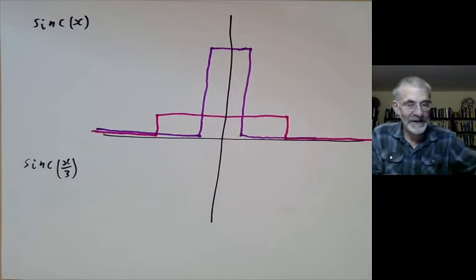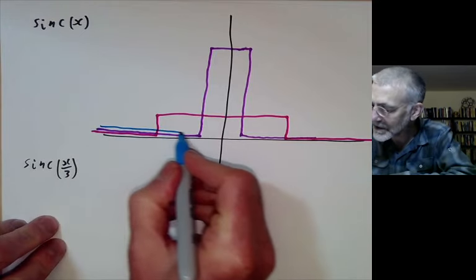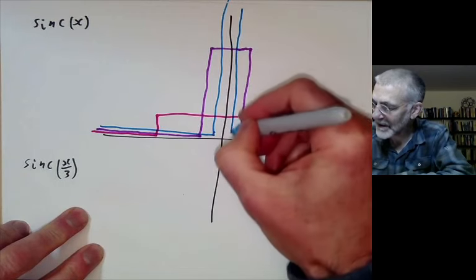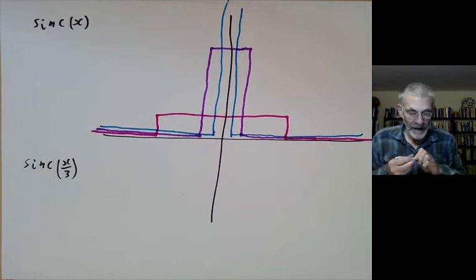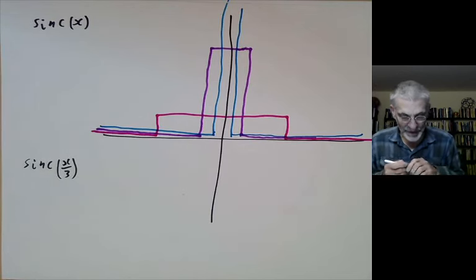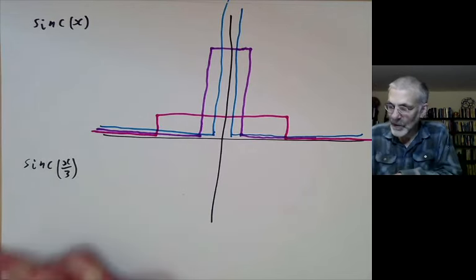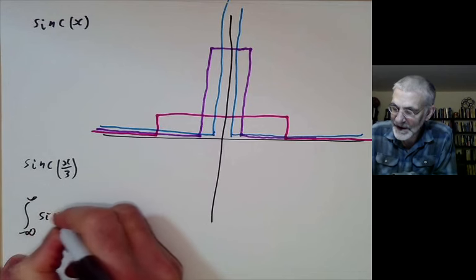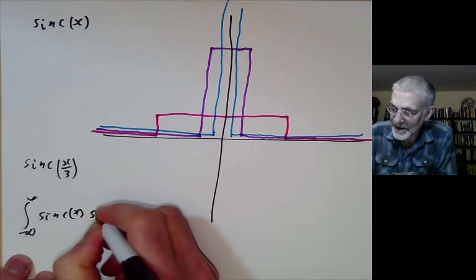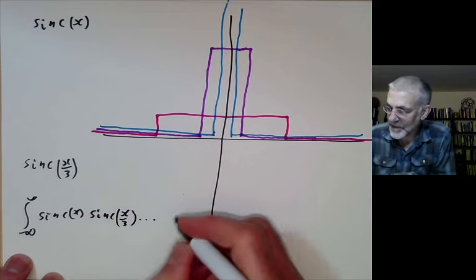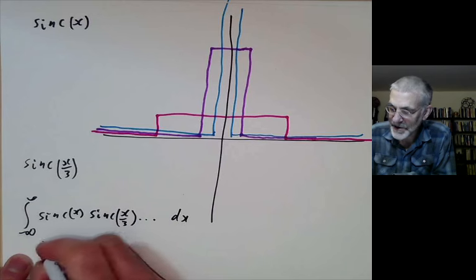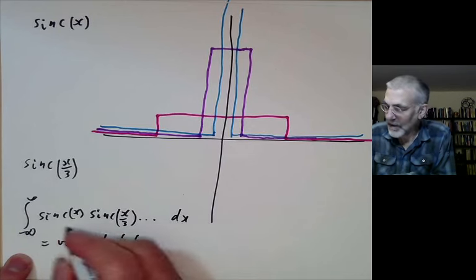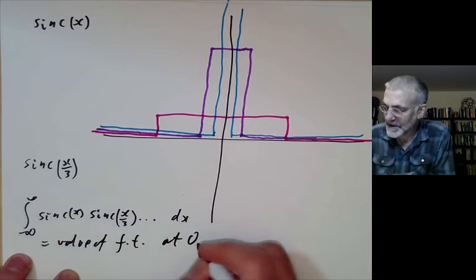And if you take the Fourier transform of sinc of x over 5, it gets even taller — its Fourier transform goes way up and then back down. Now what we want is the integral from minus infinity to infinity of sinc of x times sinc of x over 3 and so on dx, which is just the value of the Fourier transform of this expression at the point zero.